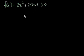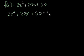So if we want to figure out where it intersects the x-axis, we just set f(x) equal to 0. And I'll just swap the left and right sides of the equation. And I get 2x² + 20x + 50 = 0.